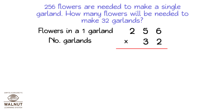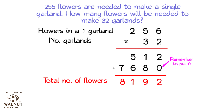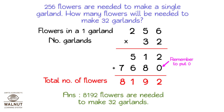We start multiplying the units. We multiply the number at the top by the digit in the units place. Then we put in a 0 and multiply with the digit in the tens place. Then we add up the two products and get the final product. 8,192 flowers are needed to make 32 garlands.